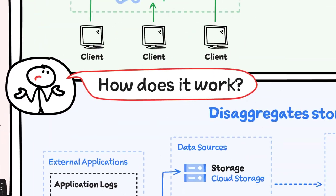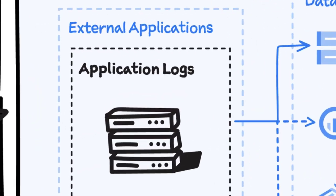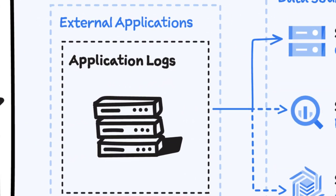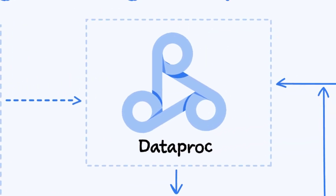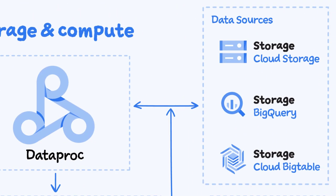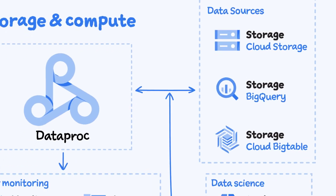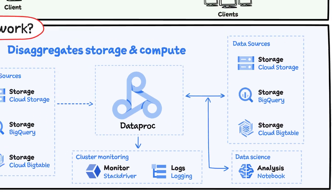Here is how it works. It disintegrates storage and compute. Say an external application is sending logs that you want to analyze — you store them in a data source. From Cloud Storage, the data will then be used by Dataproc for processing, which then stores it back into Google Cloud Storage, BigQuery, or Bigtable. You could also use the data for analysis in a notebook, and it sends logs to Cloud Monitoring.